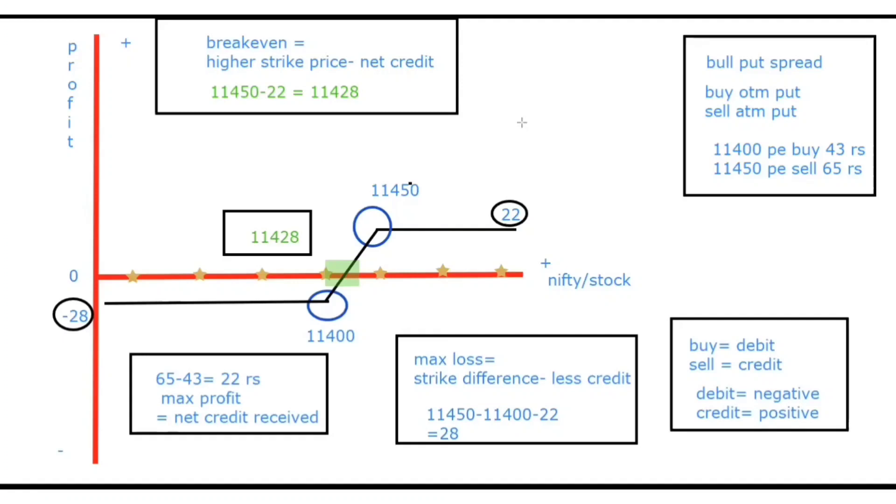Remember pichle wale strategy me that is the bear put spread. Usme bhi breakeven 11,428 tha. But if nifty would have gone to the left side of 11,428 in the previous strategy you would get profit. But in this strategy if nifty goes to the left side of 11,428 toh phir apan ko loss ho sakta hai. And vice versa that is 11,428 ke aage gaya nifty yeh strategy me toh apan ko profit ho ga. And if in the previous strategy nifty goes to 11,428 and above then you would incur loss. So I hope you understood this concept.